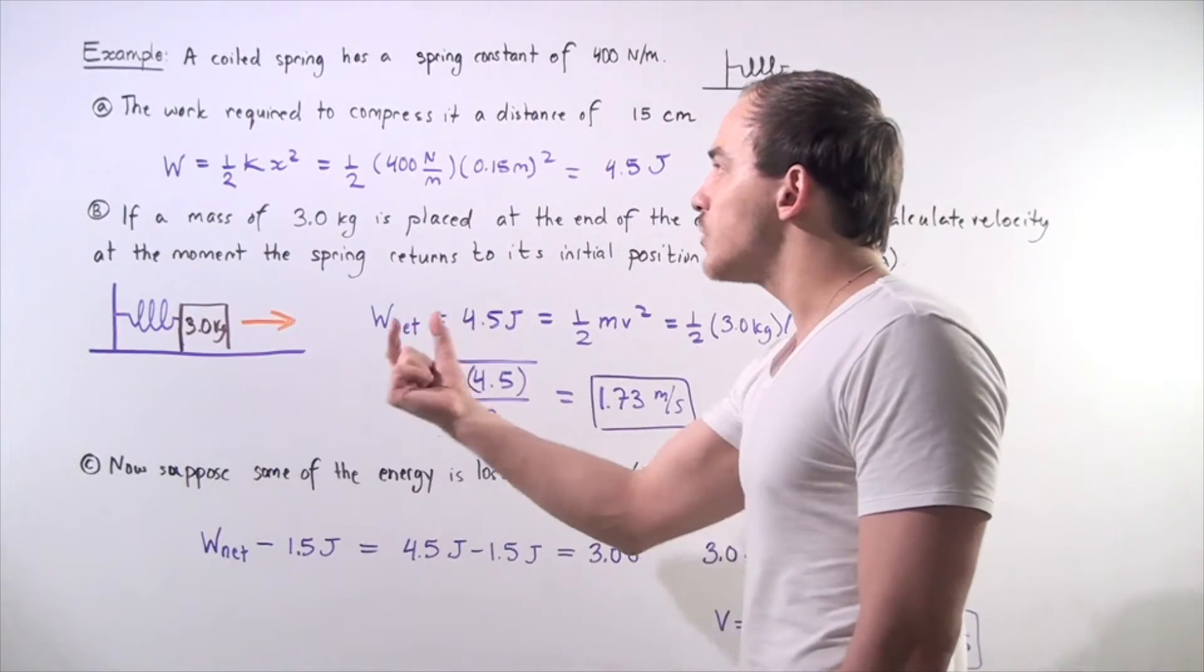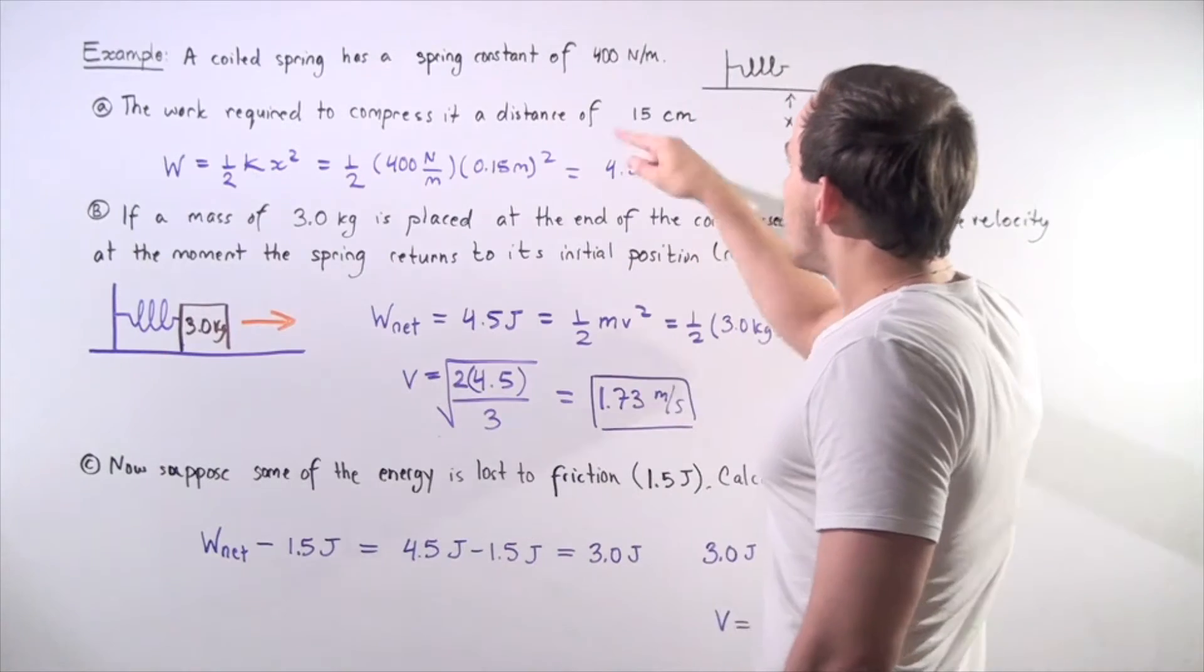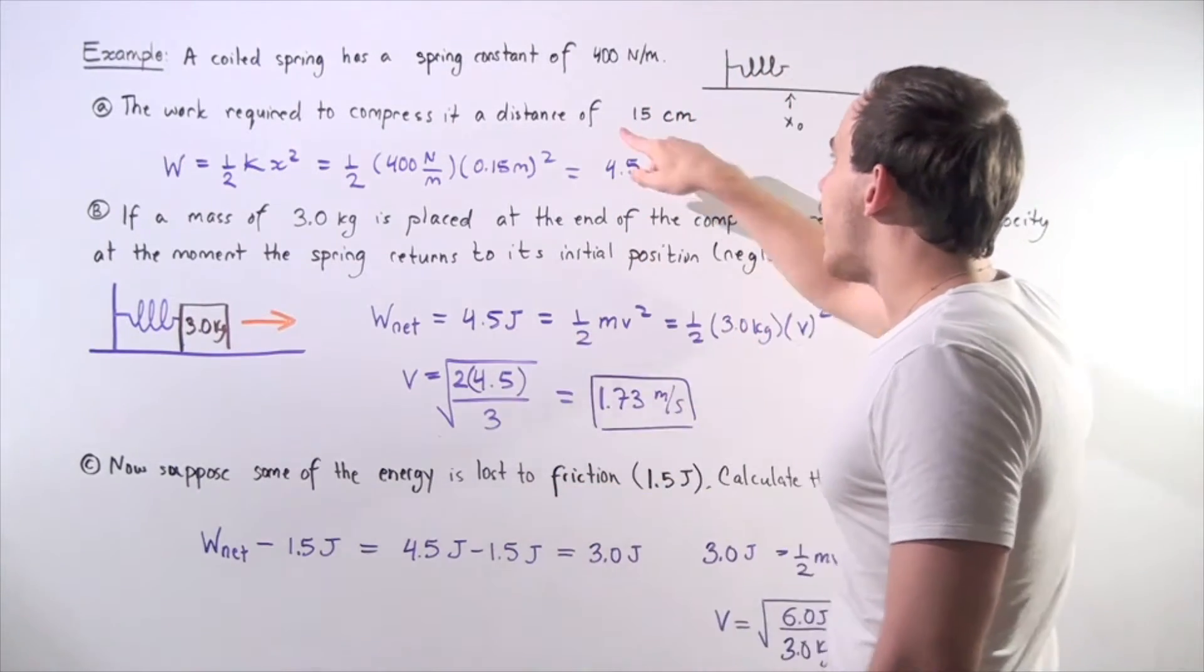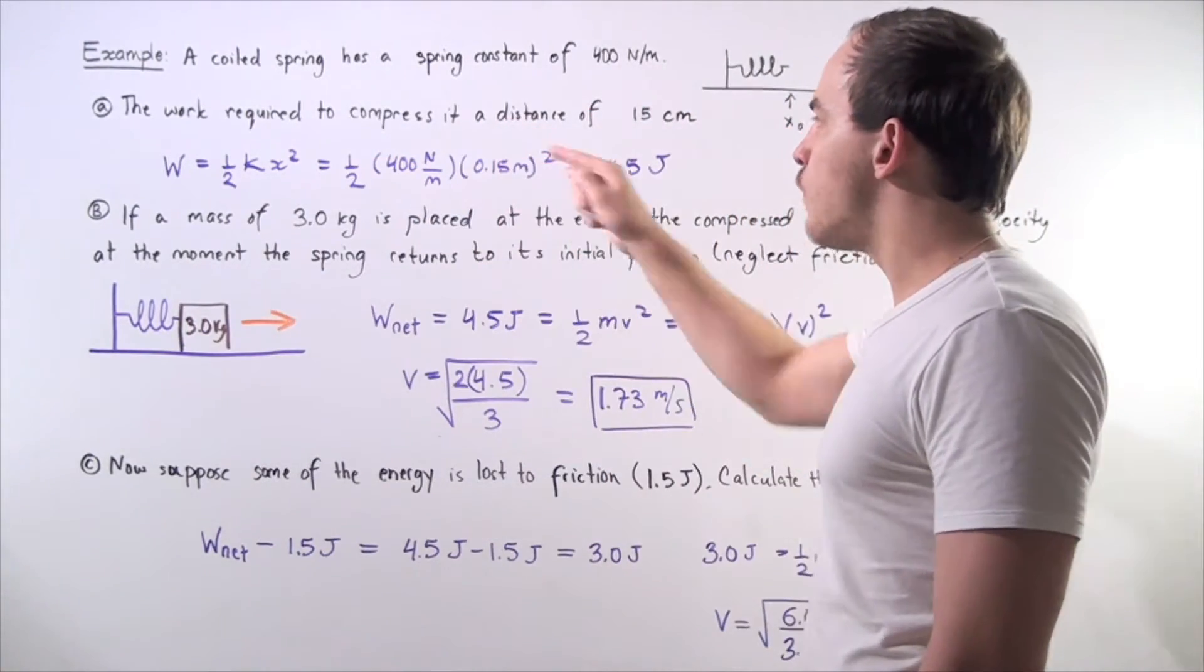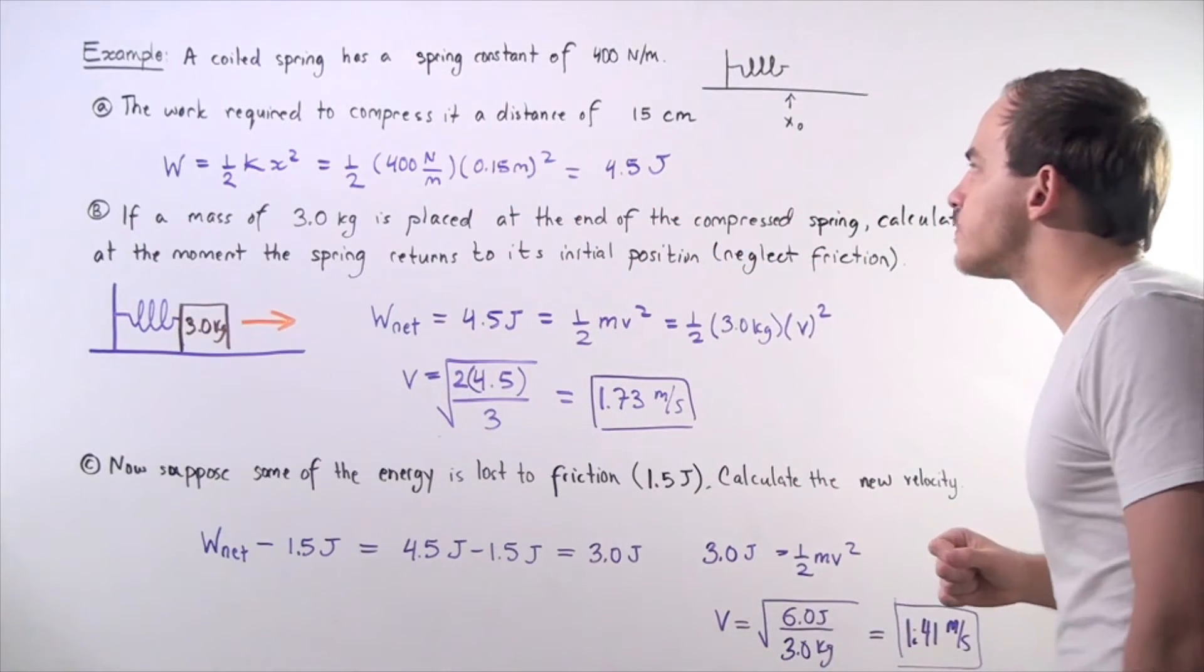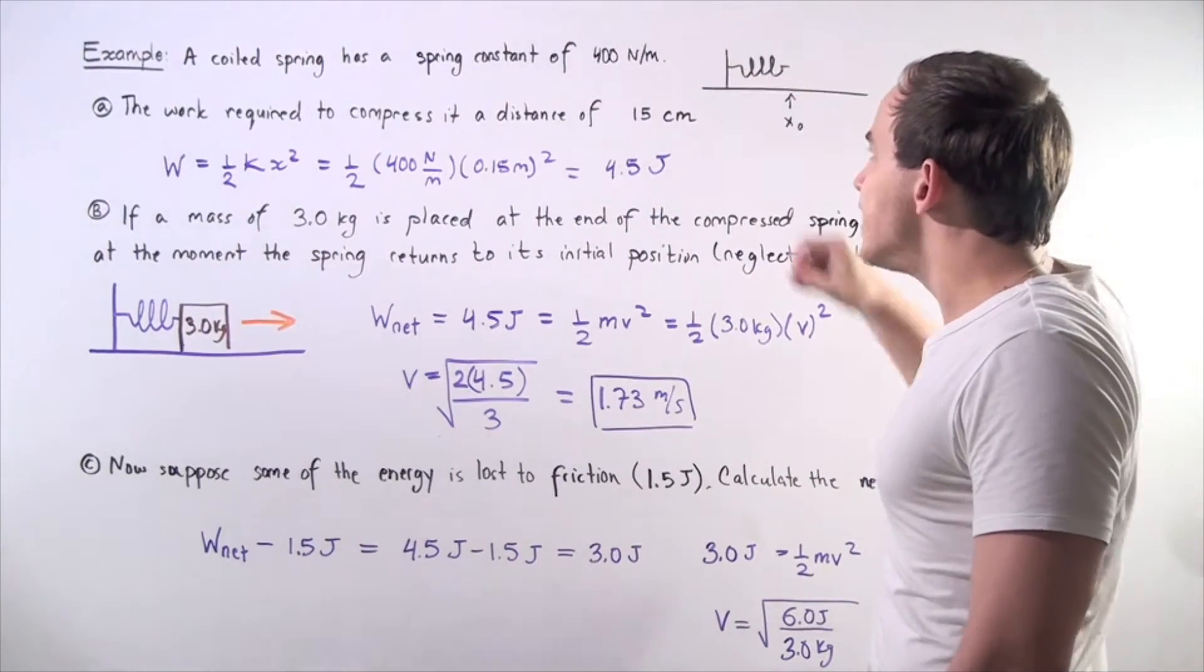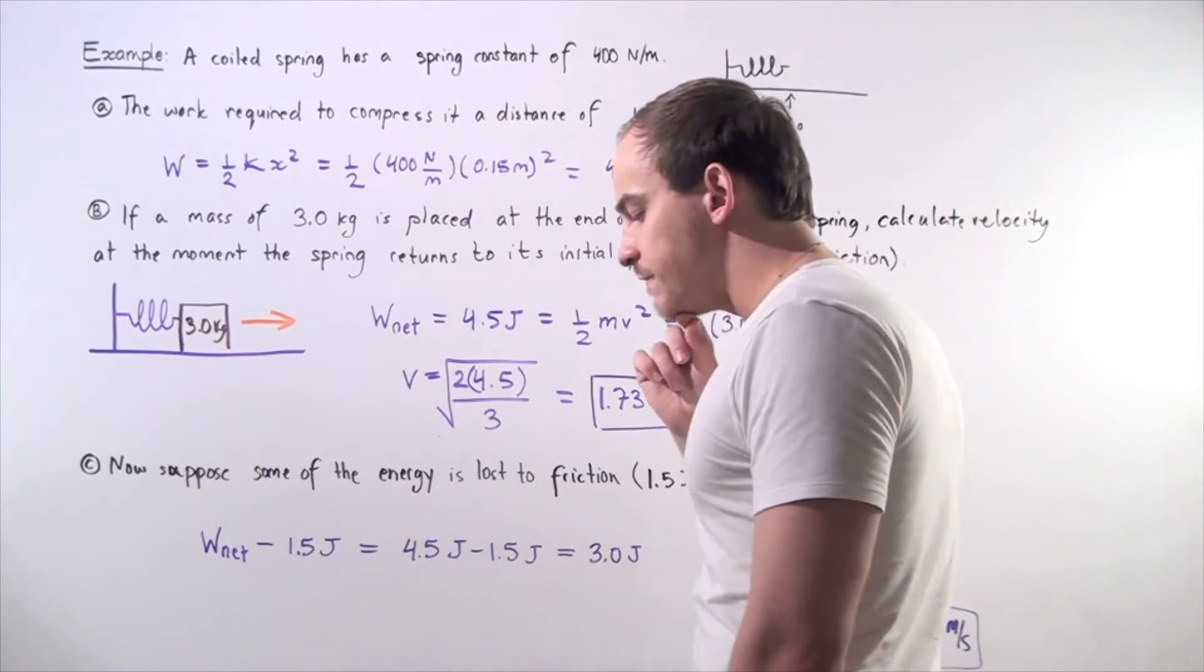In this case, our change in x is simply 15 centimeters, but because we're dealing with meters, we have to convert this to meters. Equivalently, we can say our change in x is 0.15 meters. We simply divide it by 100. We plug in our numbers. We have one-half of 400 newtons per meter multiplied by the square of 0.15 meters, and we get 4.5 joules of energy is required to compress our spring with this spring constant a distance of 15 centimeters or 0.15 meters.